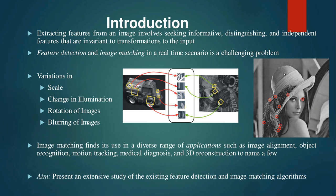Extracting features from an image involves seeking good features to track — features which are informative, distinguishing, and independent. These features are good only if they are invariant to the input. The input could be variations in scale, brightness, rotation, or blurring. Feature detection and image matching in a real-time scenario is a very challenging problem, particularly in the context of variations in the input.